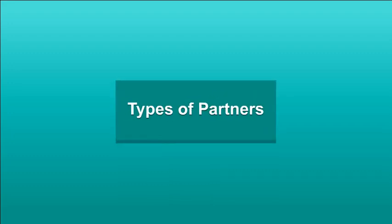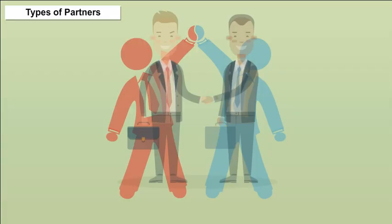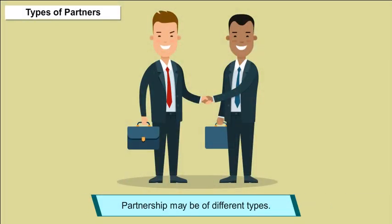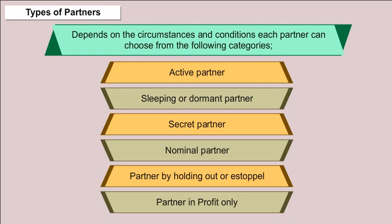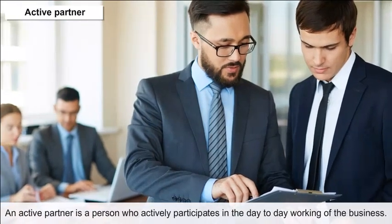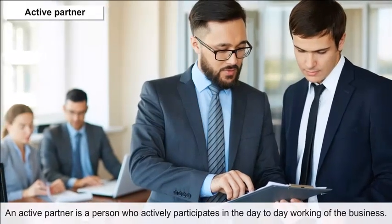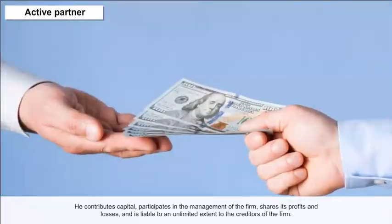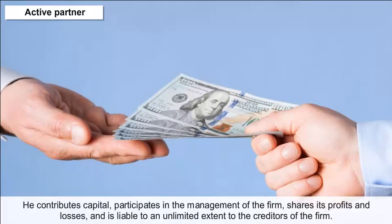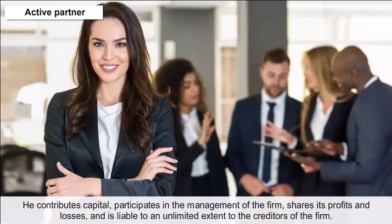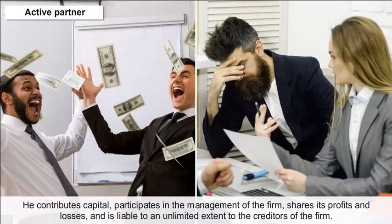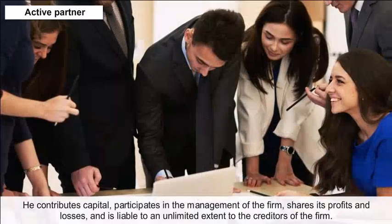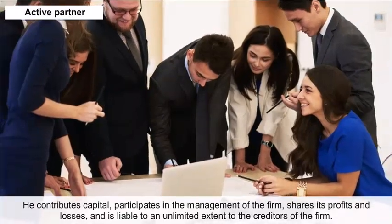Types of partners: Partnership may involve different types of partners depending on the circumstances. Active partner: An active partner actively participates in the day-to-day working of the business. He contributes capital, participates in management of the firm, shares its profits and losses, and is liable to an unlimited extent to the creditors of the firm.